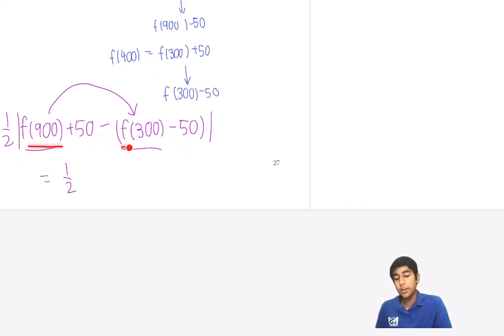So f(900) minus f(300) is 0. So that's just 1/2 of 0 plus 100. Make that bigger. Right? Because negative 50 negative plus 50. That's 100. And this is 50. Right?